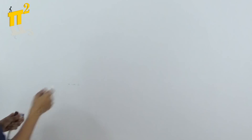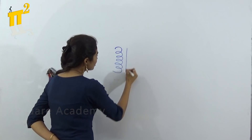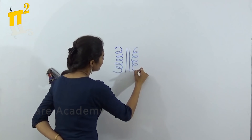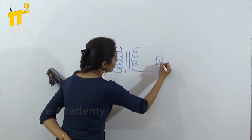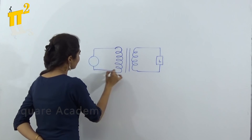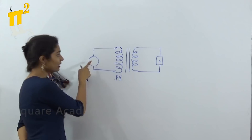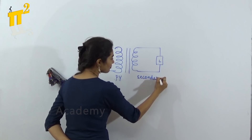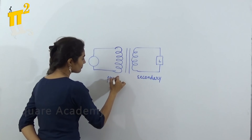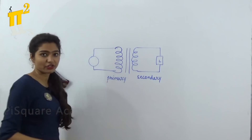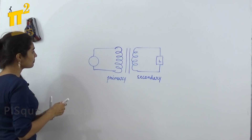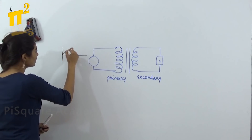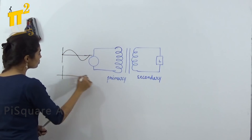I did tell you that a transformer works on DC, so we will just understand how. Let me draw a transformer. So this is my transformer — I have drawn the windings, this is my core. This becomes my primary winding; I have given the source here. I have attached the load here, so this becomes my secondary winding. Now let me give an AC supply and also a DC supply.